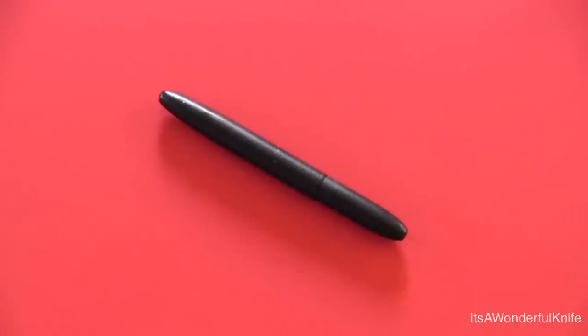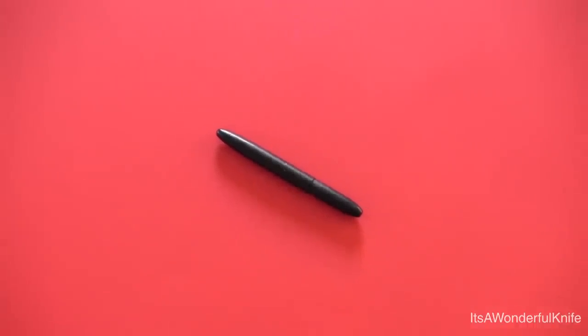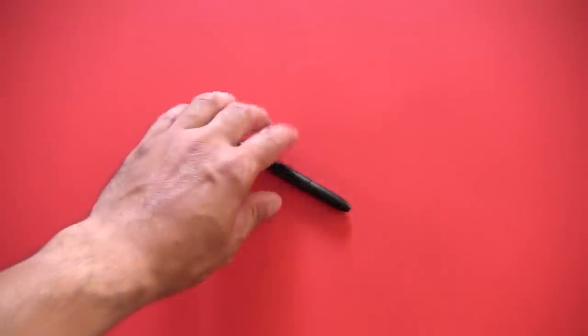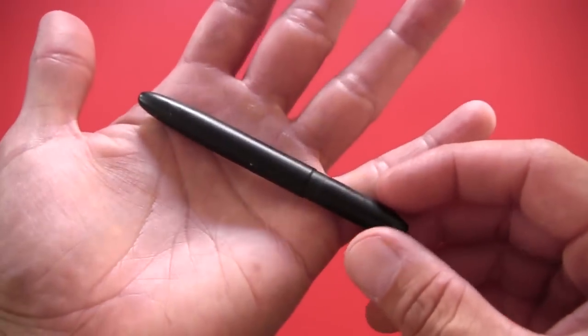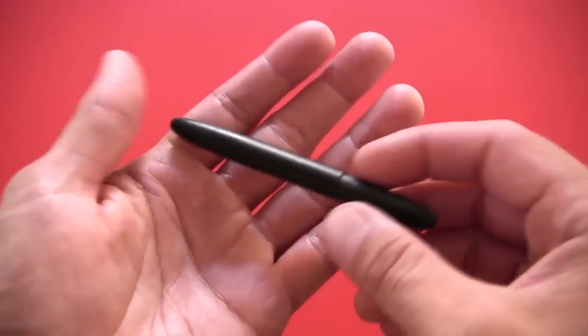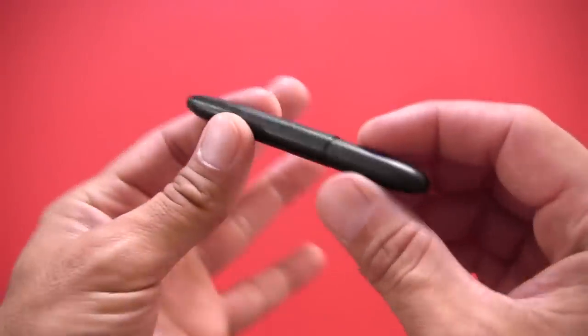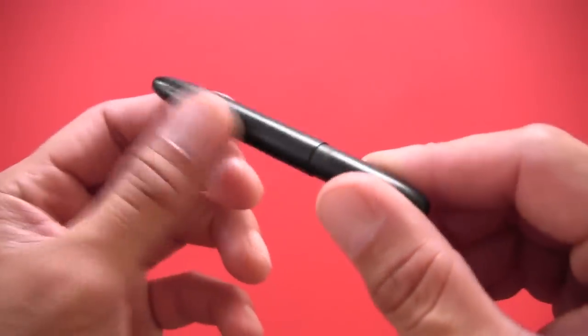This particular bullet pen is the 400B, that's the model number. I think all of the Space Pen bullet series are model number 400 with a different letter identifying which model in particular it is, the B in this case referring to this matte black finish.